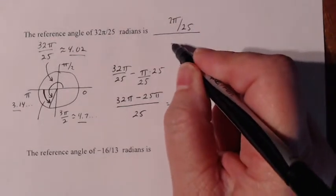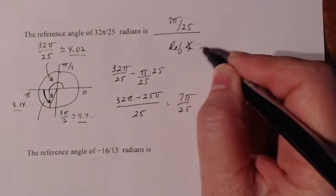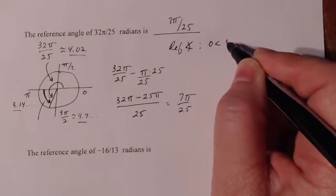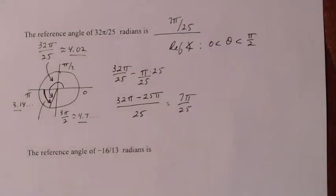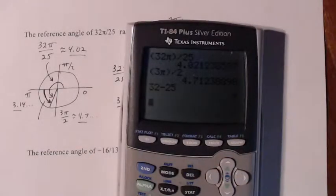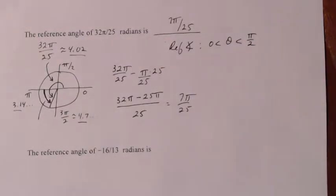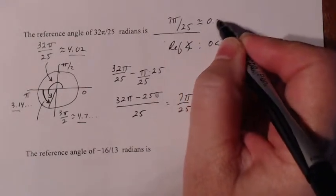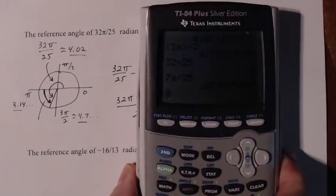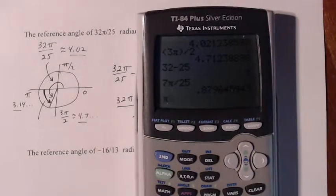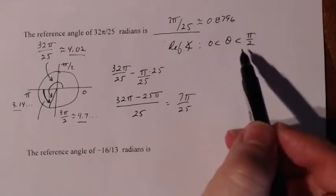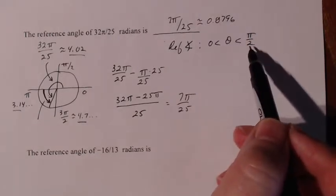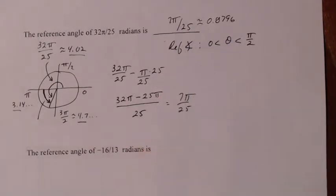To verify, the reference angle needs to lie between zero and π over 2. Let me approximate 7π over 25: that gives me about 0.8796. And π over 2 is about 1.57. Since 0.8796 is between zero and 1.57, I know I have the right reference angle.